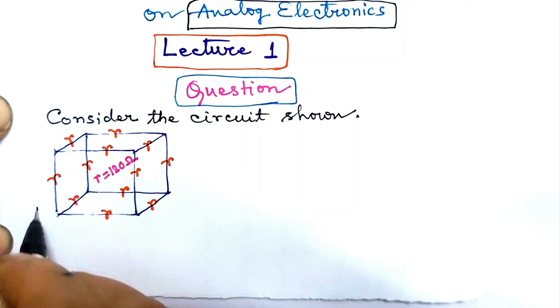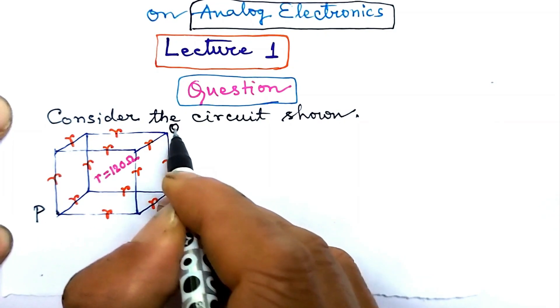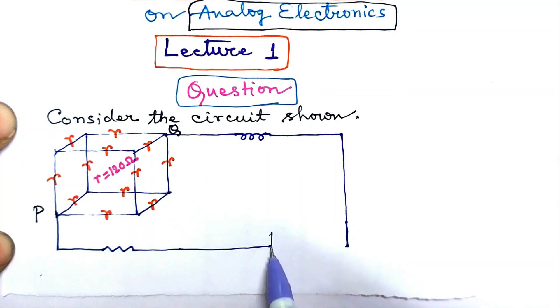This corner point is p and this corner point is q. Let us complete the circuit. This is an...